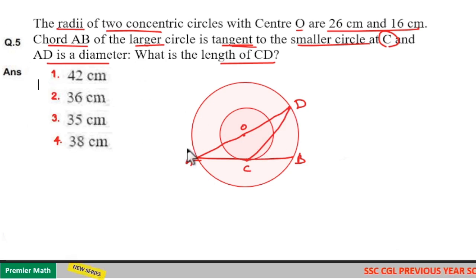If you look at this, AD is diameter. Diameter can create 90 degrees at any point on the circumference of the circle. Point B is on the circumference of the circle, so this angle is 90 degrees.